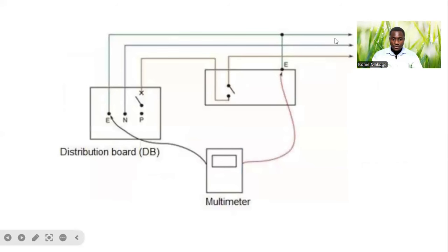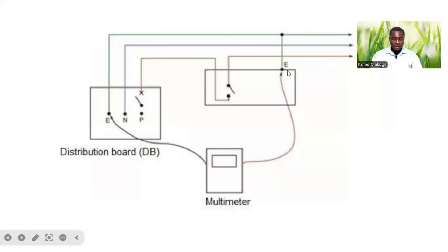This graphic shows where wires have been pulled — we have phase, neutral, and earth pulled from the distribution board. We also have a light switch at one end, and the cable or wires are running and moving to a load. We use our multimeter to carry out the test to ensure that we have continuity between the two ends of the earth conductor.